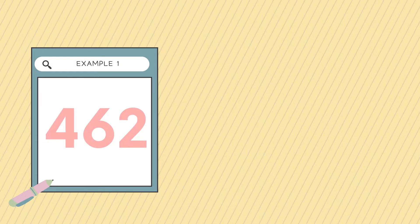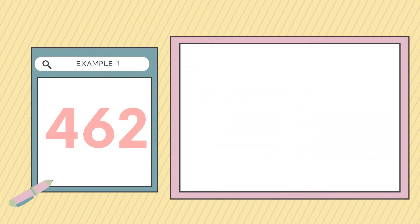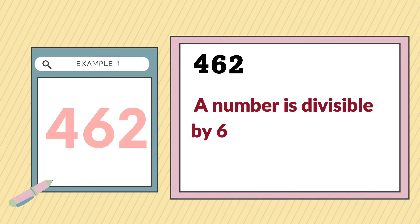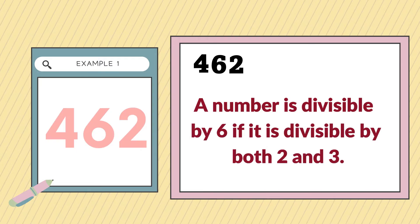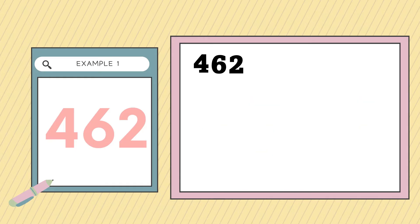For example, 462. Is this number divisible by 6? Let's check. First, we're going to check if it is divisible by 2, because a number is divisible by 6 if it is divisible by both 2 and 3. Is 462 divisible by 2? 462 is divisible by 2 because it ends with an even number, which is 2. Next, we're going to check if this number is divisible by 3.